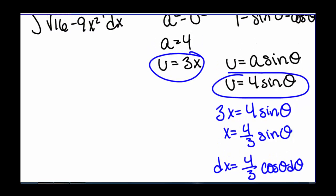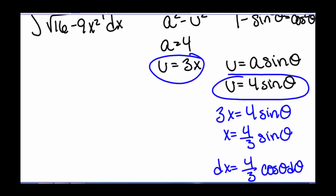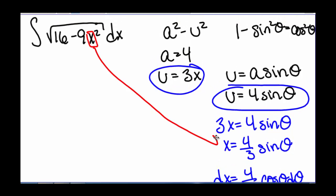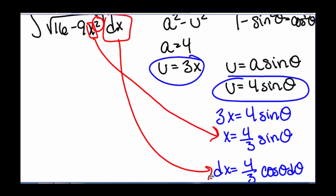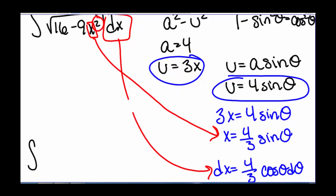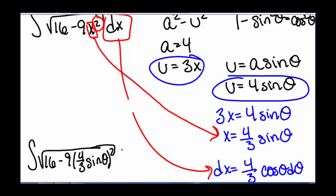So now we're ready to make our substitutions. We're going to substitute in for x: x equals 4 thirds sine of theta, and remember that whole quantity is going to be squared. And we're also going to substitute in for dx: 4 thirds cosine of theta d theta. So making our substitution, we have the square root of 16 minus 9 times the quantity 4 thirds sine of theta all squared, times 4 thirds cosine of theta d theta.